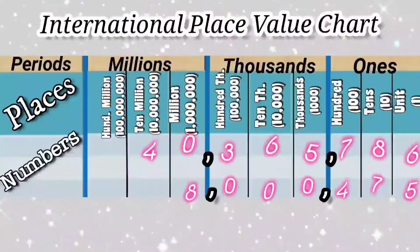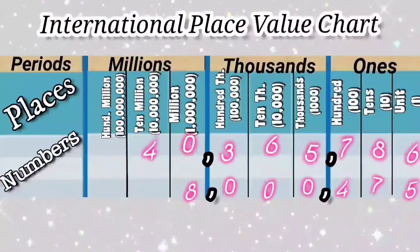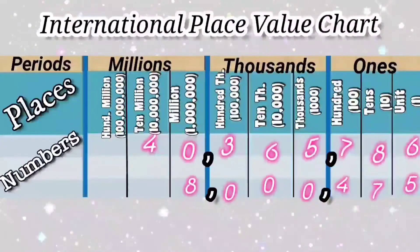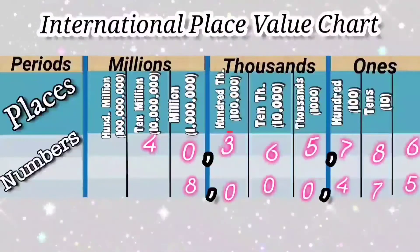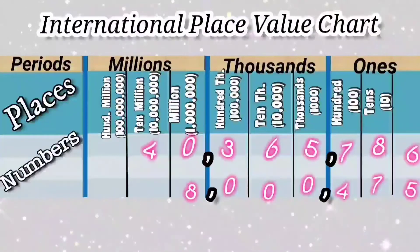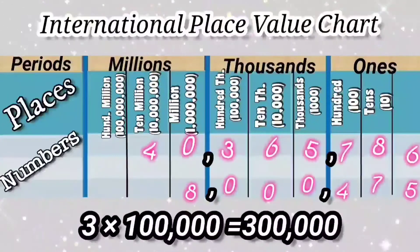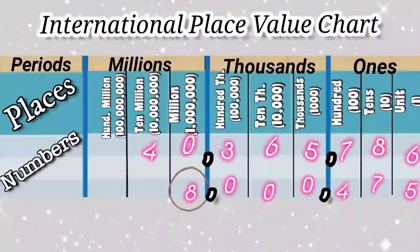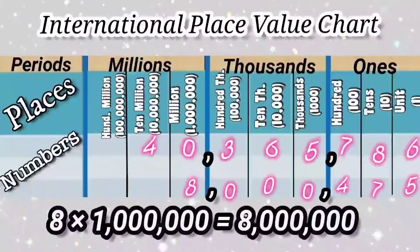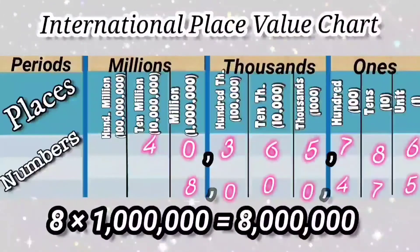Let us discuss the place value of a digit now. Place value is equal to face value multiplied by the position of the digit. The place value of 3 in the first number is 3 × 100,000, which is equal to 300,000. The place value of 8 in the second number is 8 × 1,000,000, which is equal to 8,000,000.